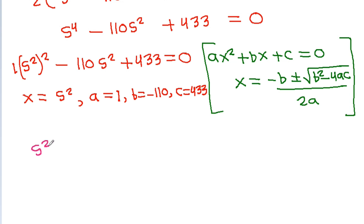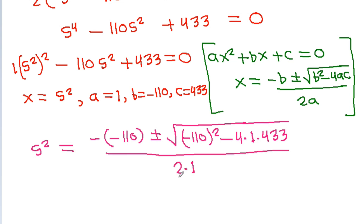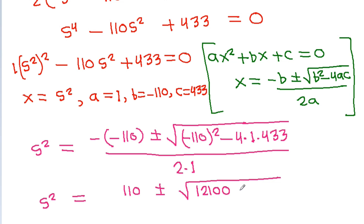So s squared equals minus b, which is 110, plus or minus square root of b squared minus 4ac, divided by 2 times a. That is: s squared equals 110 plus or minus square root of 110 squared minus 4 times 1 times 433, divided by 2. So s squared equals 110 plus or minus square root of 12100 minus 1732, divided by 2.